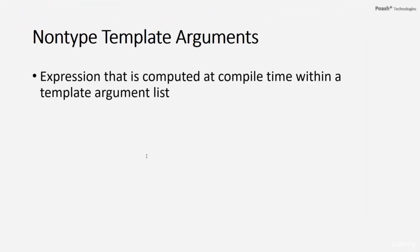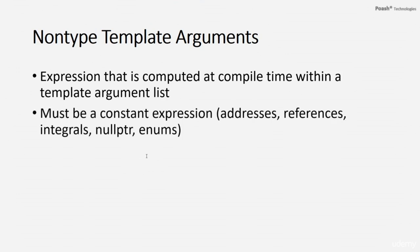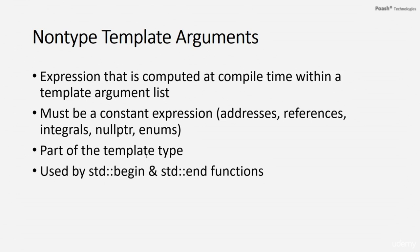A non-type template argument is an expression specified in the template argument list that is computed at compile time — that is why it must be a constant expression. The constant expression could be an address, reference, integrals, null pointer, or enums. If it is an address, it should be a static address computed at compile time — so you can specify a pointer to a variable or pointer to a function. The non-type template argument is part of the template type. Non-type template arguments have been used in the standard library to implement the global begin and end functions for static arrays. We will revisit non-type template arguments again with classes.